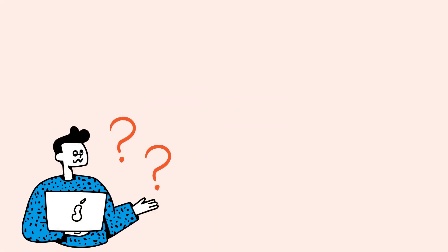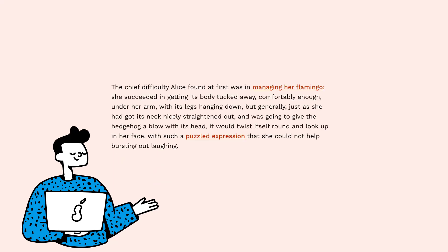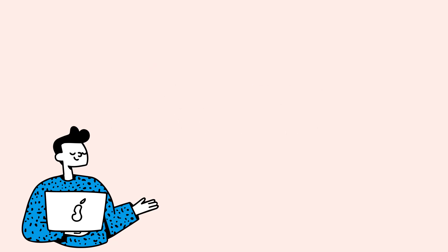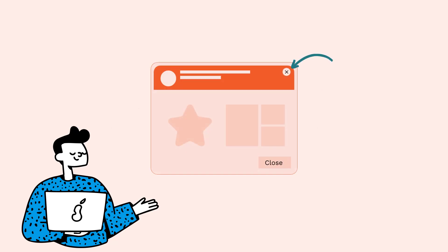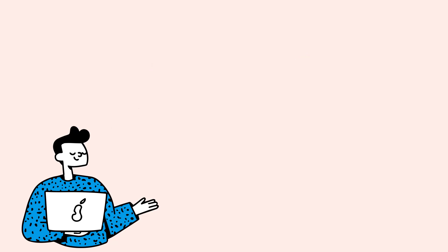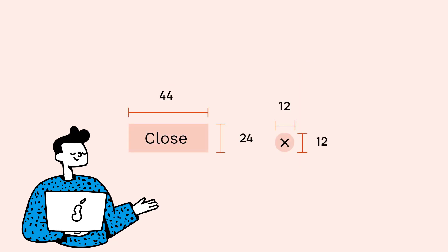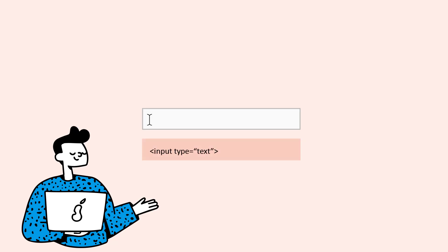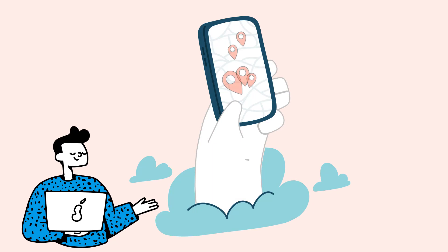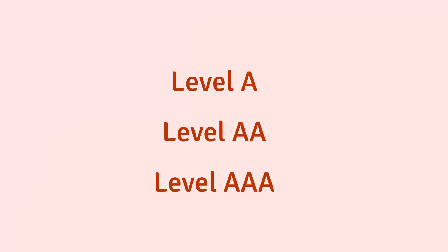There are some scenarios where you don't have to worry about this: when the interactive element is inline, such as a link within a sentence; when there is another interactive element on the page that does the same thing and meets a minimum size or has enough space around it; when the target size is default and you haven't changed it; or when the target size is essential. The new target size minimum criterion is a level AA requirement.